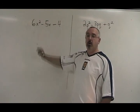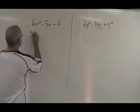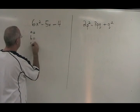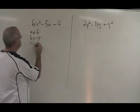We start off the same though, we identify our a, b, and c. In this case, a is 6, b is negative 5, and c is negative 4.